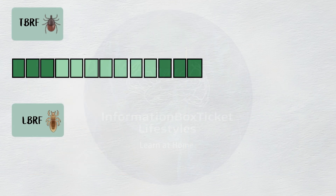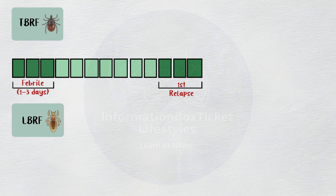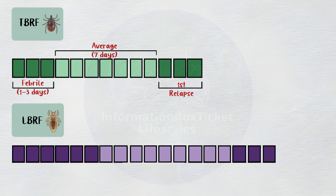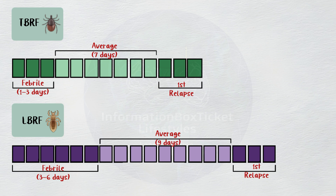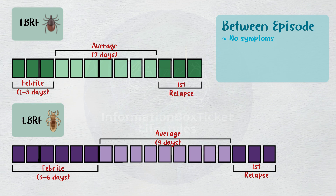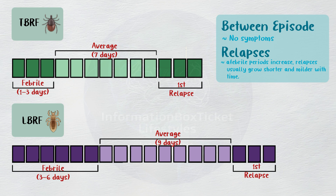The febrile episode in TBRF typically lasts 1 to 3 days, and the time interval between the first incident and the first relapse is 7 days on average. With LBRF, the initial febrile episode typically lasts 3 to 6 days, and the time interval between the onset and the first recurrence averages 9 days. People experience no symptoms between episodes, and relapses usually grow shorter and milder with time as afebrile periods increase.